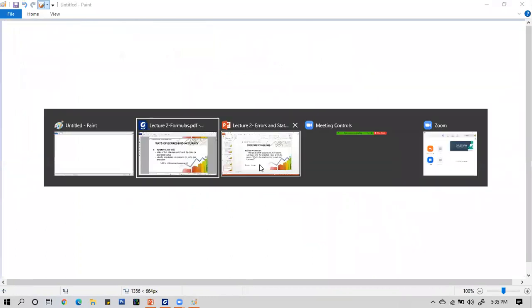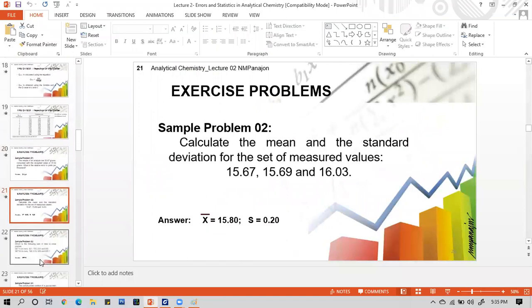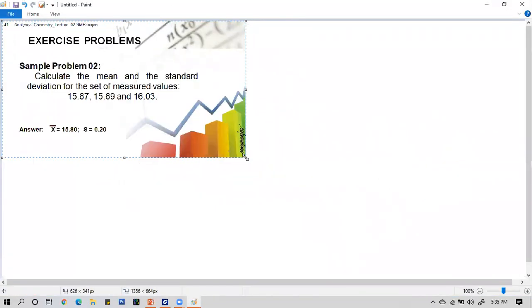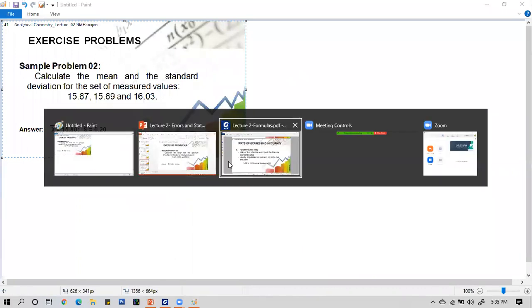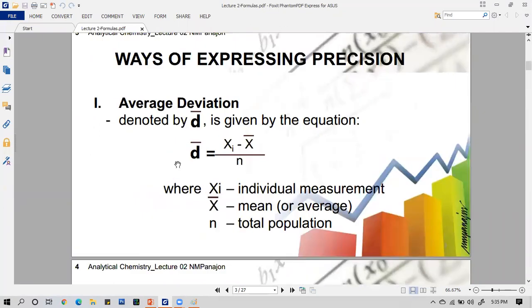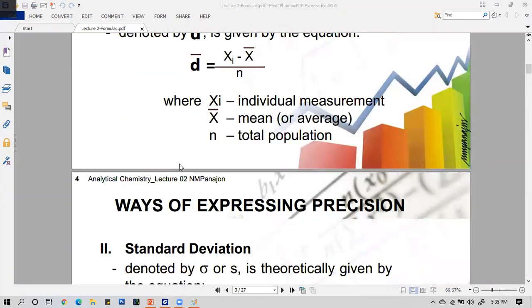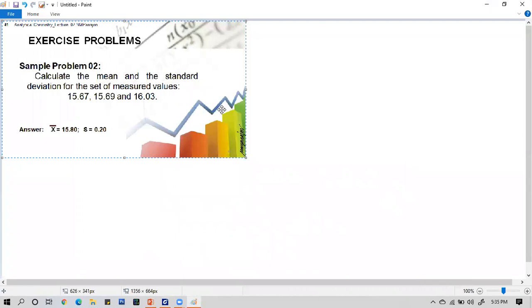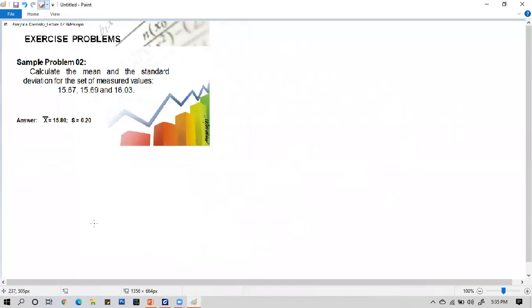Let's go to the next problem on slide number 21. Calculate the mean and standard deviation of the set of measured values. The standard deviation formula is here, and the mean is just an average. To calculate the mean, x equals 15.67 plus 15.69 plus 16.03, all over 3. Our answer is 15.80.